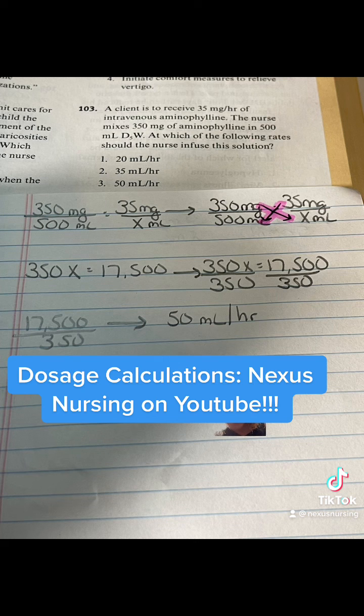Option 1: 20 mLs per hour. Option 2: 35 mLs per hour. Option 3: 50 mLs per hour. I covered up number 4, so our choice is going to be between 1, 2, and 3.